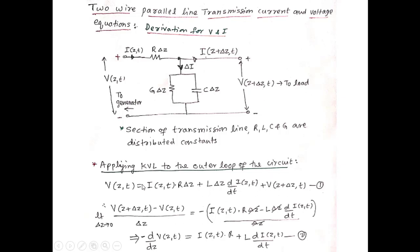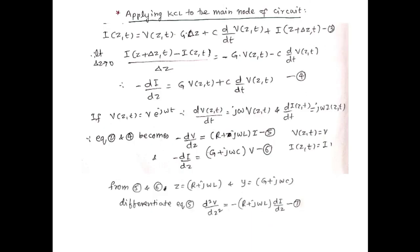The output voltage at the load side is V(Z+ΔZ, T). Applying KVL to the outer loop of the circuit, we get V(Z,T) = I(Z,T)·(R·ΔZ + L·ΔZ·dI/dt) + V(Z+ΔZ, T). Rearranging and taking the limit as ΔZ tends to zero, this becomes the derivative: −dV/dZ = I(Z,T)·R + L·dI/dt, after ΔZ cancels out.